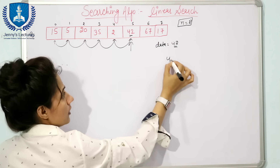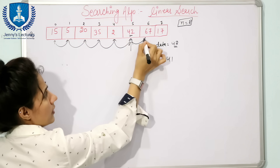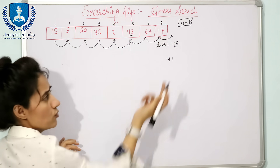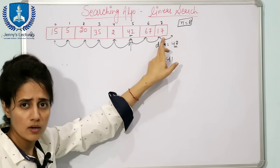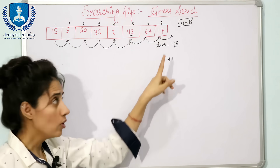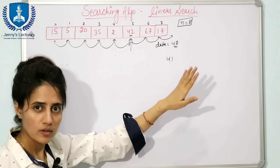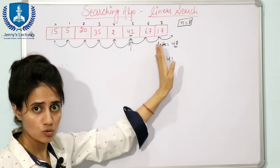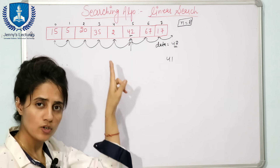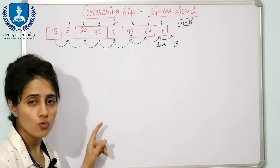The second case: if data is not present. Suppose you want to search 41. Not 41 here, not 41, not 41 — next, next — we stop because we don't have any more elements. The second stopping condition is: you have reached the end of the array and the data is not present. Two stopping conditions: either you find the data or you reach the end of the array.